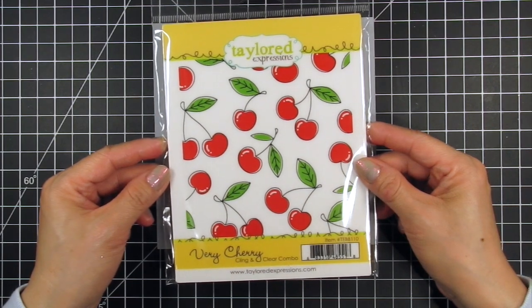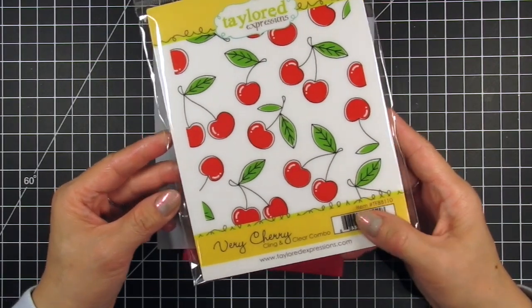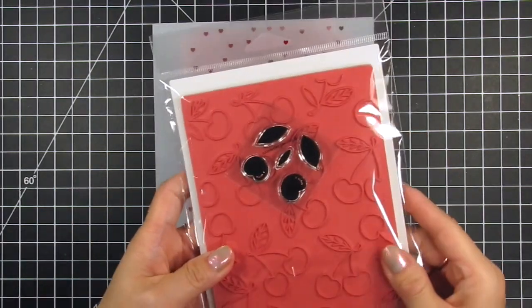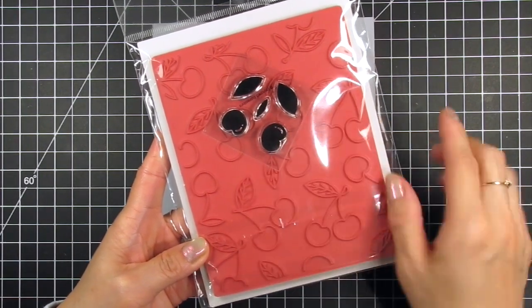Here's a look at what you get with this gorgeous kit. The first ingredient is the Very Cherry cling and clear combo. This large rubber cling background stamps a full A2 outline and the clear stamp fills in those cherries and leaves.